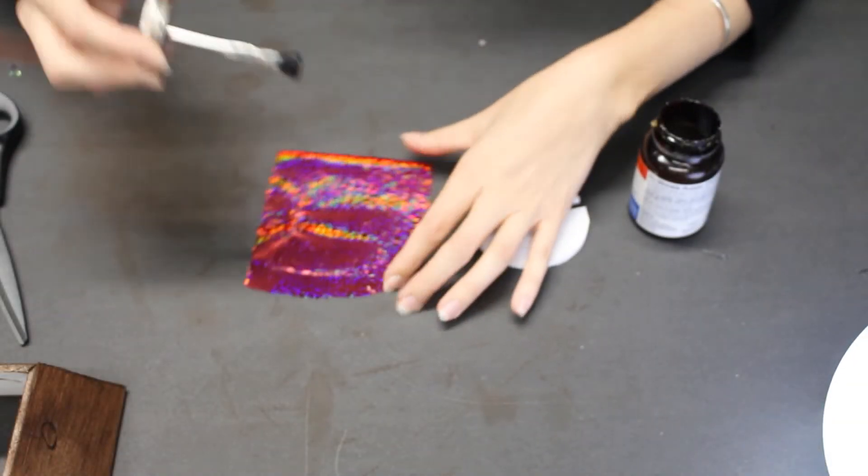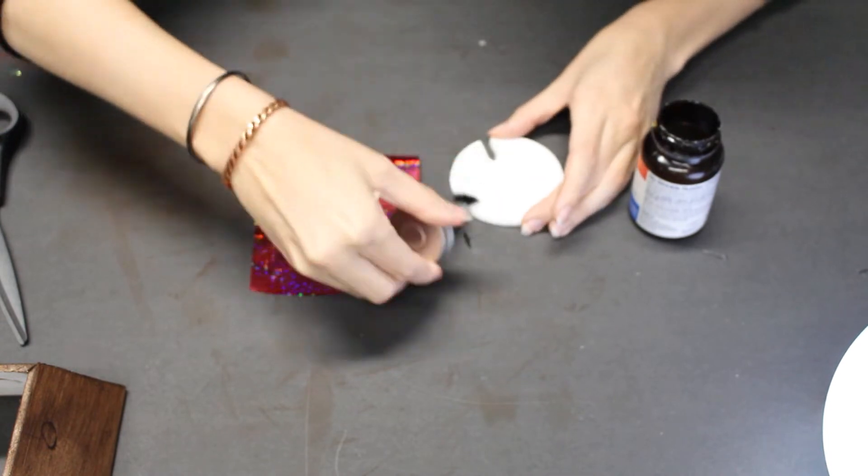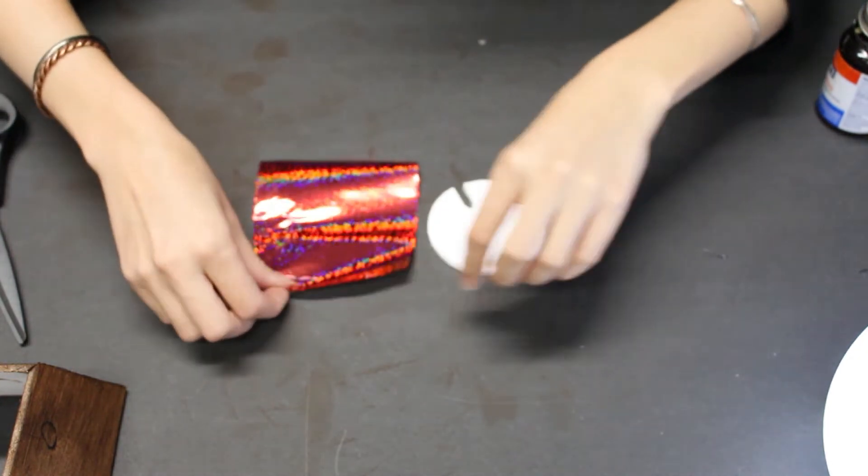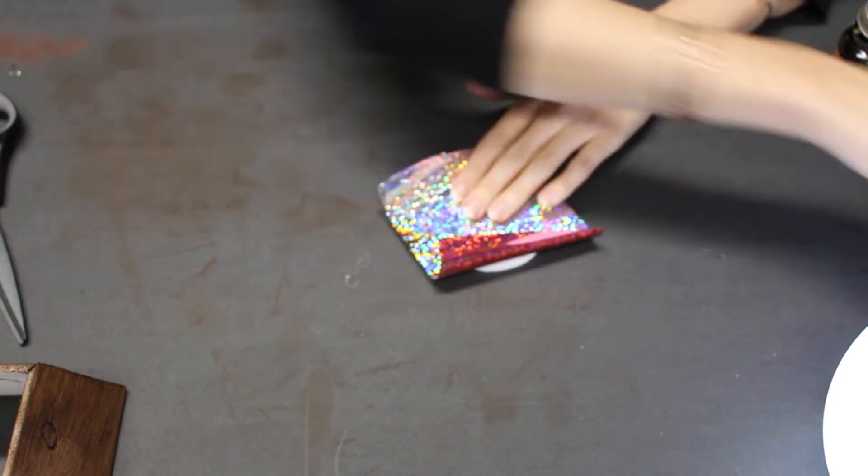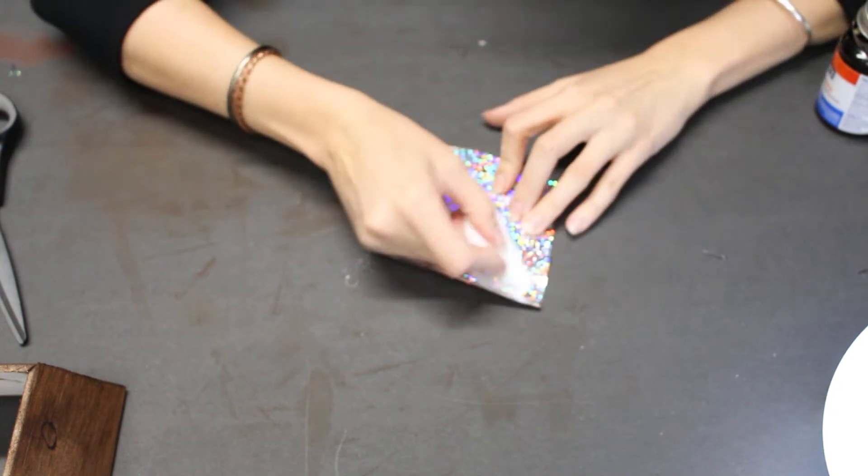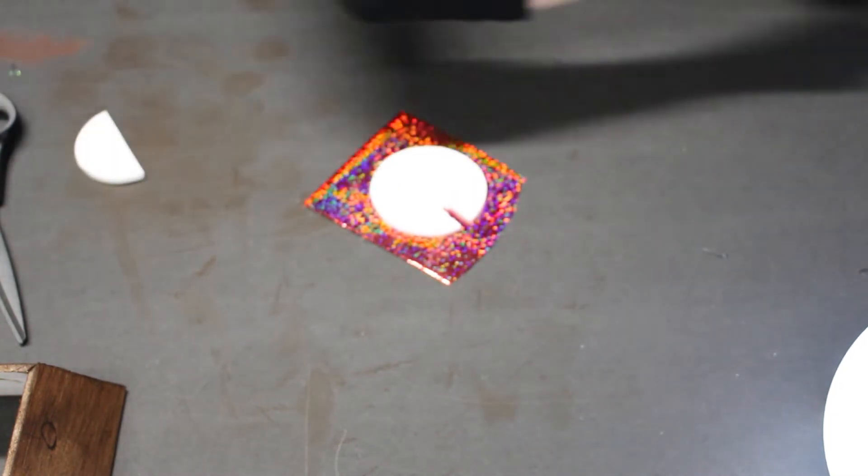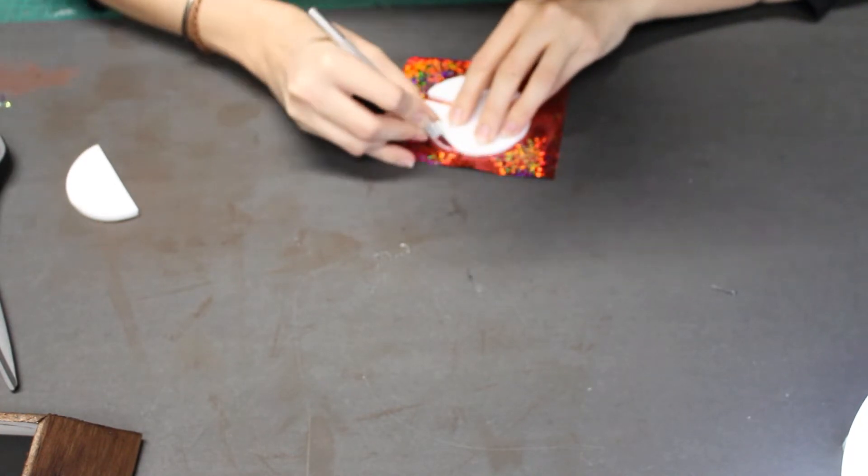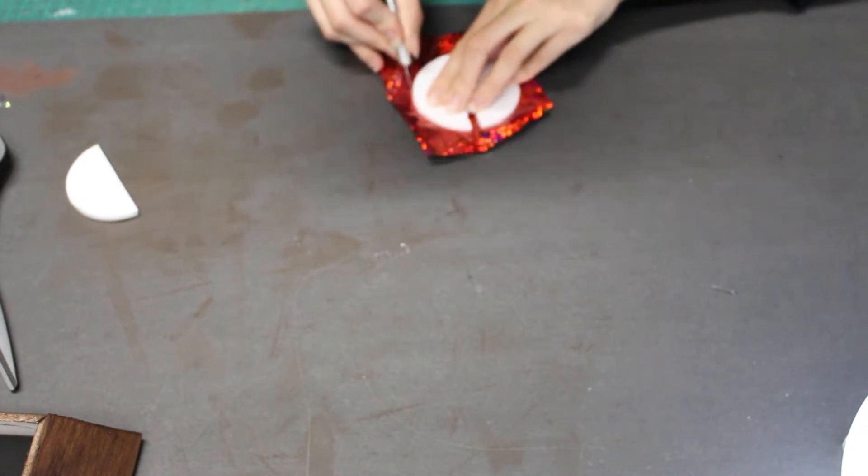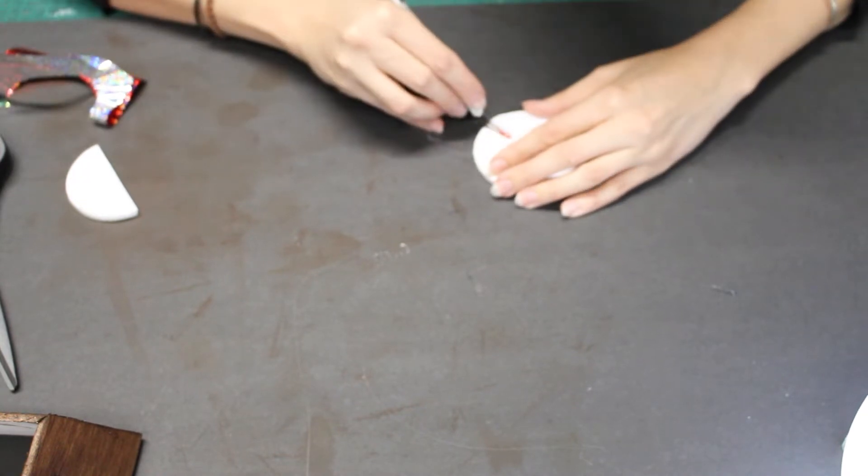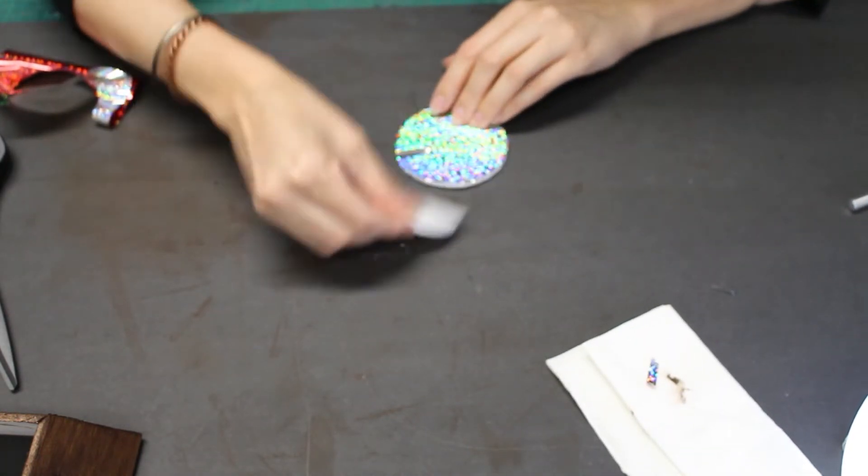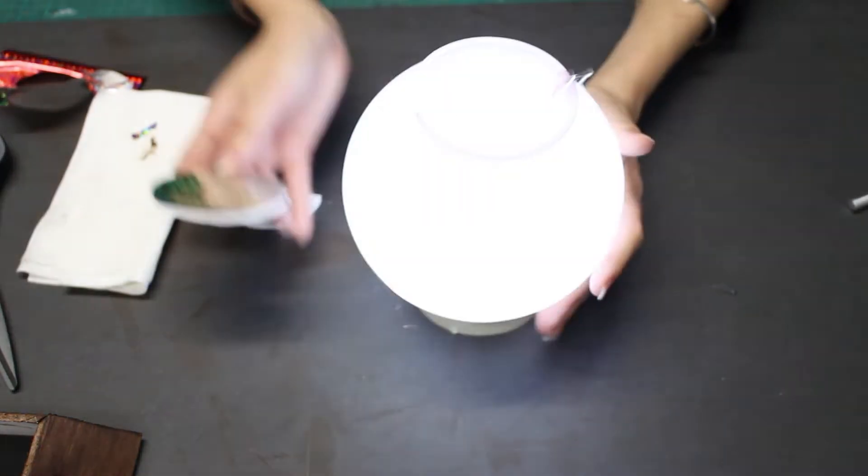I'm using rubber cement for this, but you could use a different type of adhesive. Once it's attached, I'll trim away the excess. Then finally put it into place.